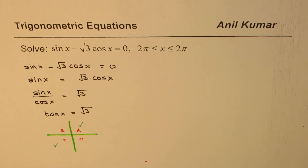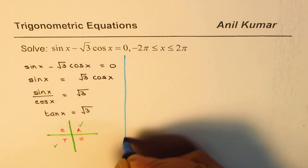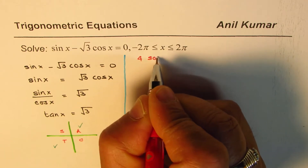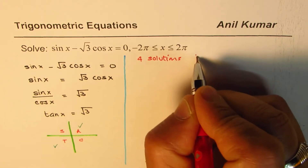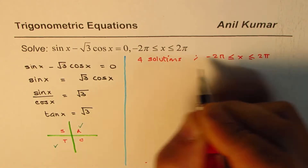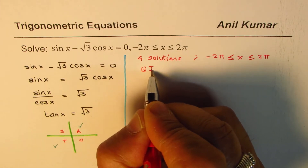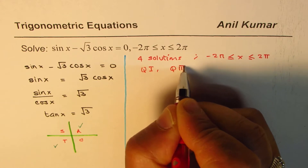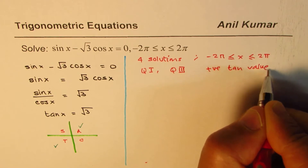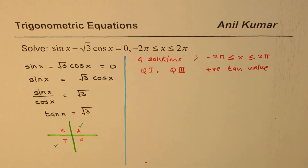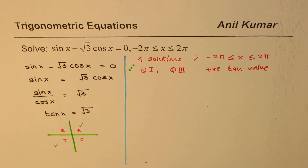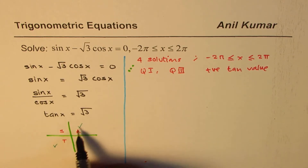We are looking for four solutions — two in 0 to 2π and two in 0 to minus 2π. Let me make a note of this: we are looking for four solutions since the domain is from minus 2π to 2π, and these solutions are in quadrant 1 and quadrant 3 since we have a positive tan value. This is just the thinking process.